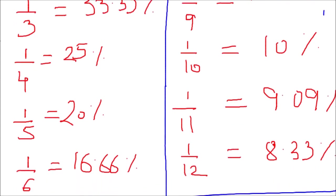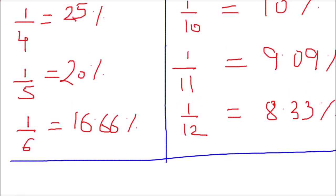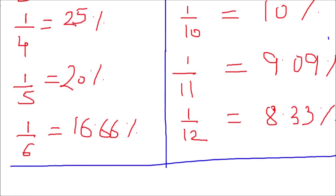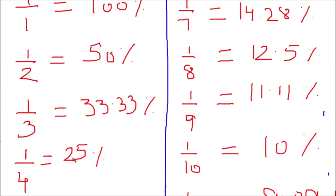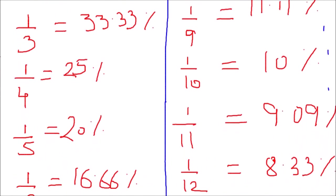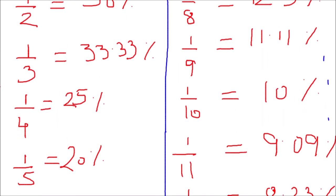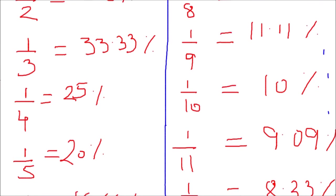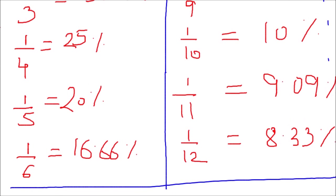From 1/6 onwards you should remember: 1/6 is 16.6%, and similarly 1/7, 1/8, 1/9, 1/10, 1/11, and 1/12. 1/10 you already know — that's 10%. So you just need to remember six of the remaining ones, since you already know 1/1, 1/2, 1/3, 1/4, 1/5, and 1/10.